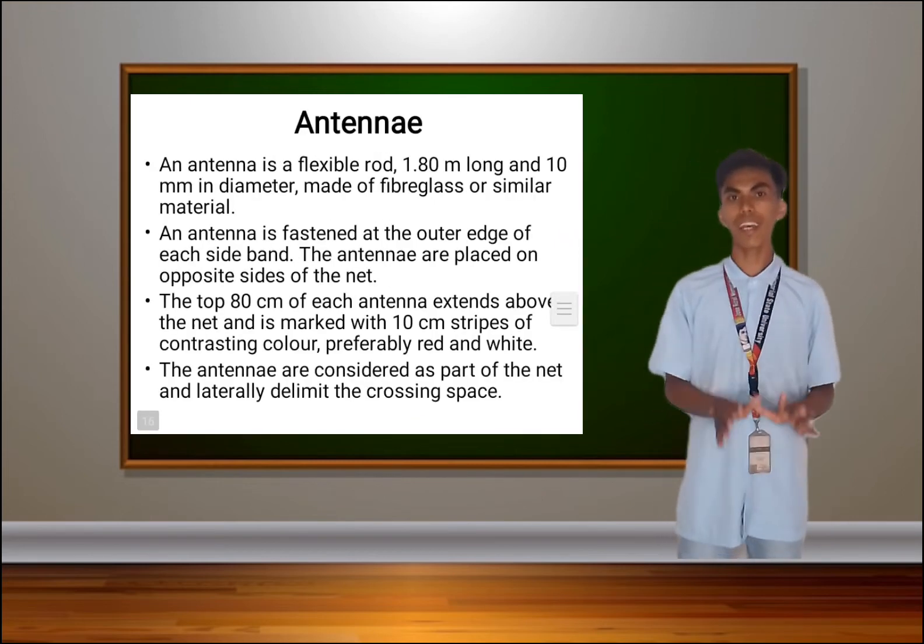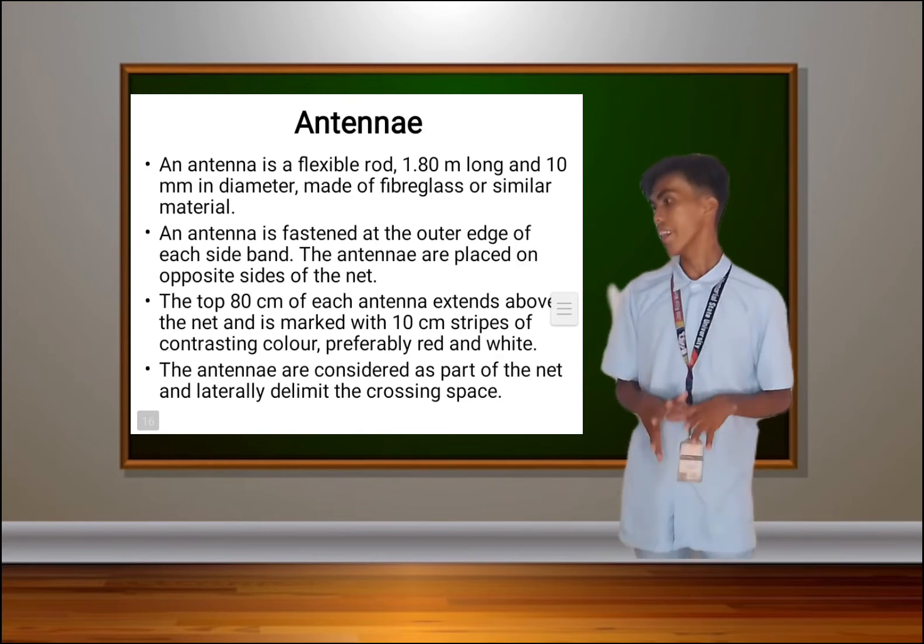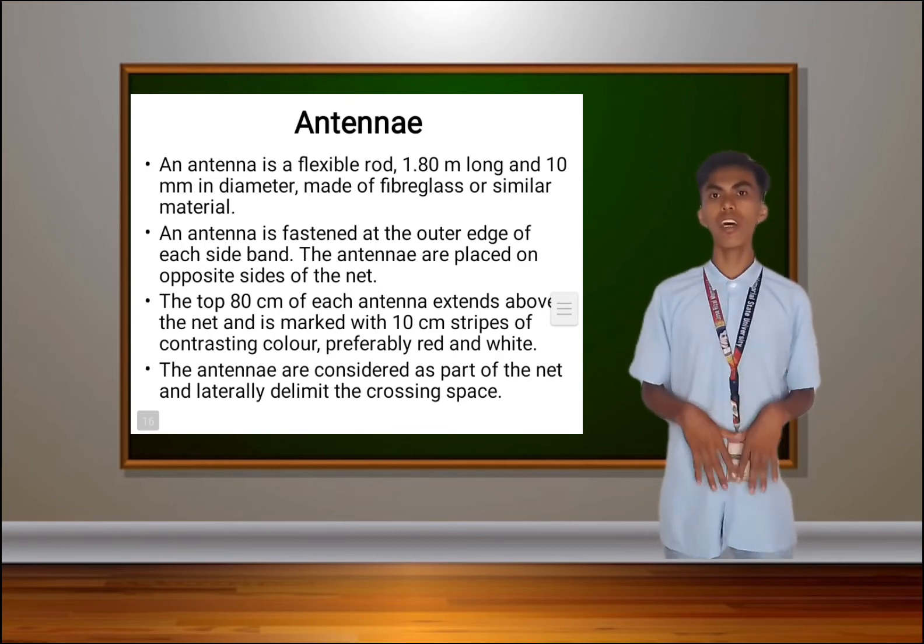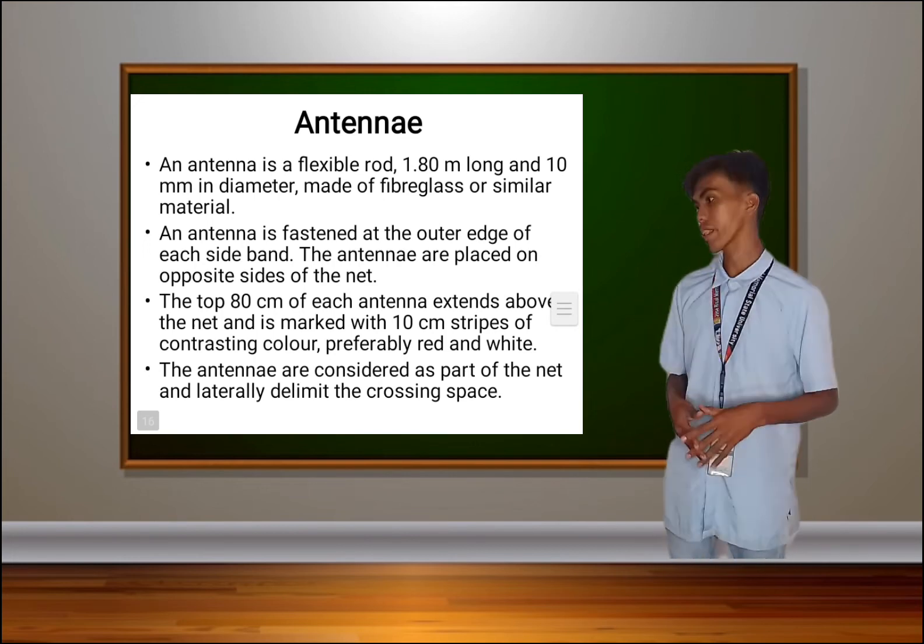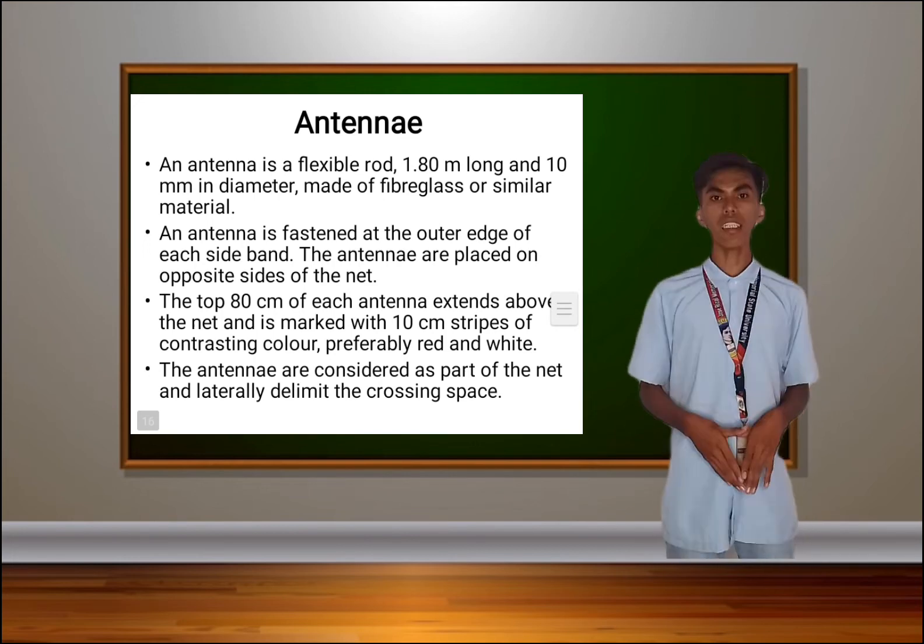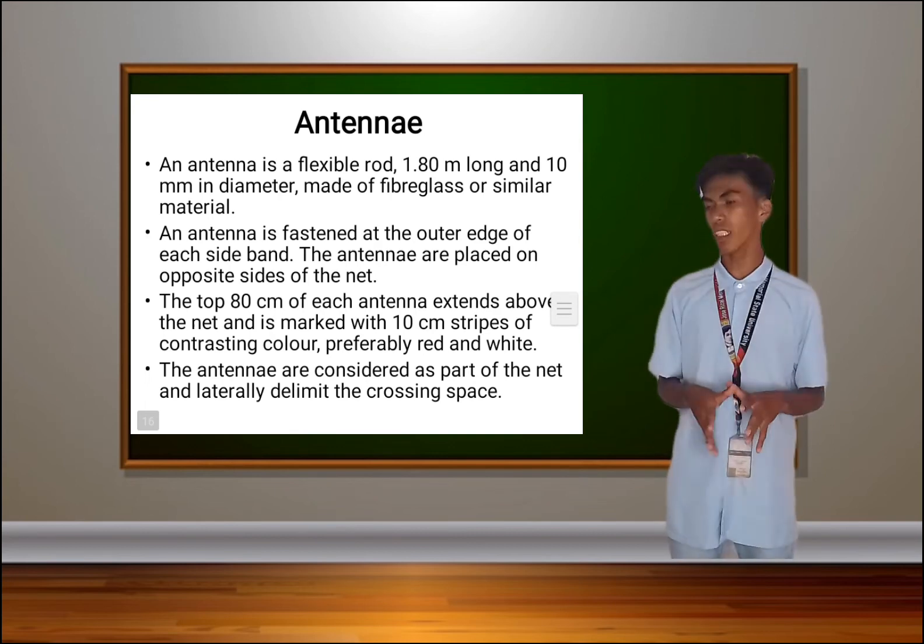They are 5 centimeters wide and 1 meter long and are considered as part of the net. Next is the antenna of volleyball. An antenna is a flexible rod, 1.80 meters long and 10 millimeters in diameter, made of fiberglass or a similar material.